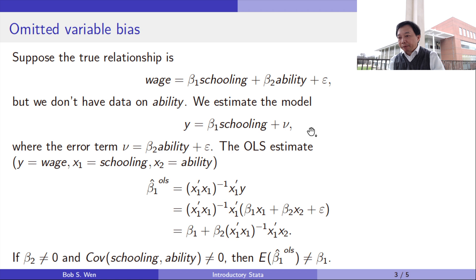We don't have data on it and the model we estimate is to regress wage on schooling only. The unobserved ability is omitted from the model. Now the error term contains the ability variable.